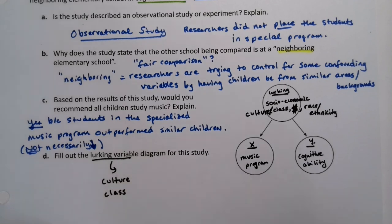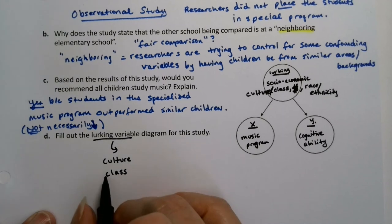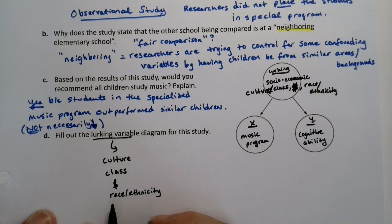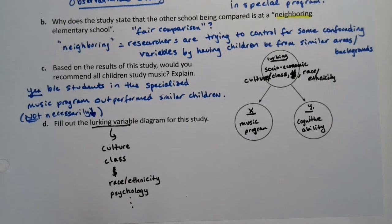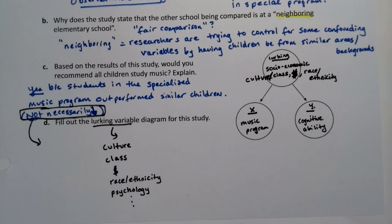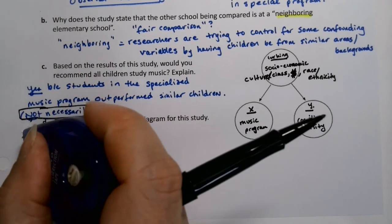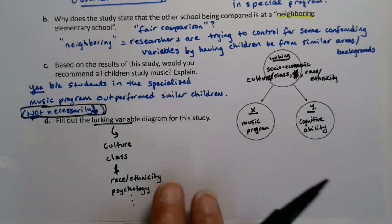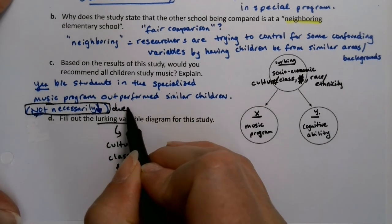Culture, class, societal class, money, how much money the family earns, race and ethnicity, psychology, culture, genetics — there's a lot of things that could be affecting what's going on. Which by the way means this relationship is not necessarily true. You would not necessarily want to recommend your children go into this program, because there could be other things going on that make them have higher cognitive abilities. Maybe they had higher cognitive abilities to begin with. So not necessarily, due to lurking variables.